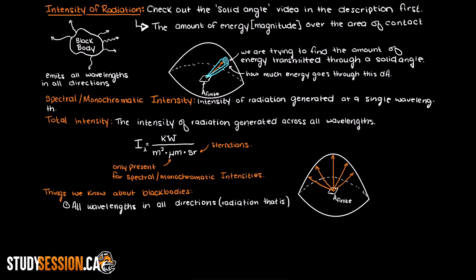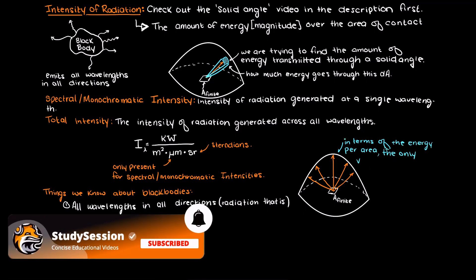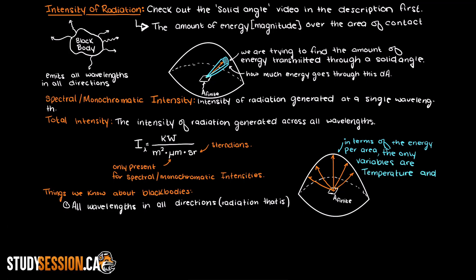Therefore, the intensity of radiation in phi and theta directions do not matter, and spatially it doesn't matter as well. Therefore, the only things affecting the spectral black body intensity is the wavelength of interest and the temperature.